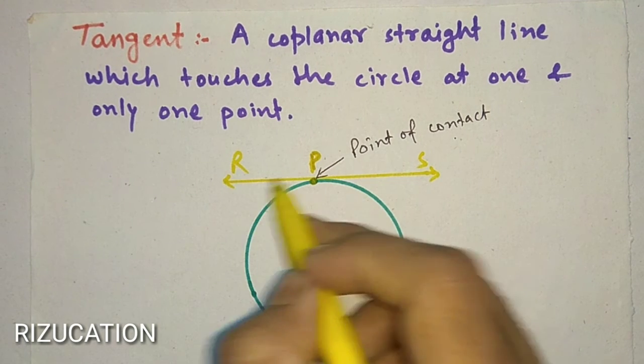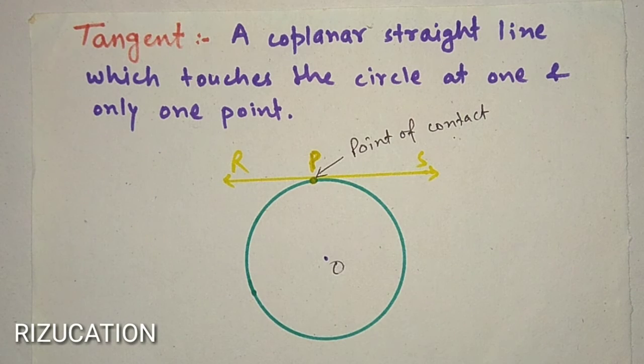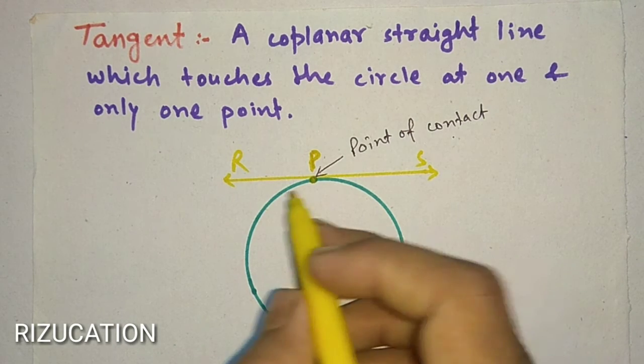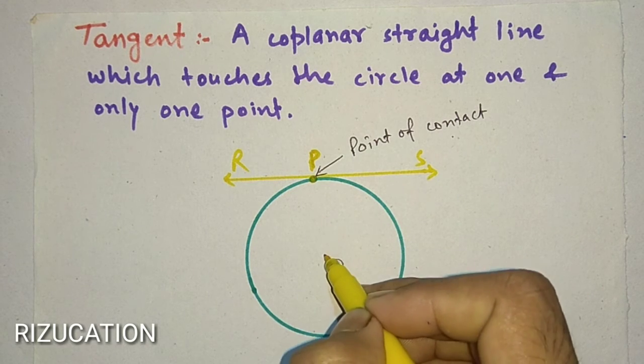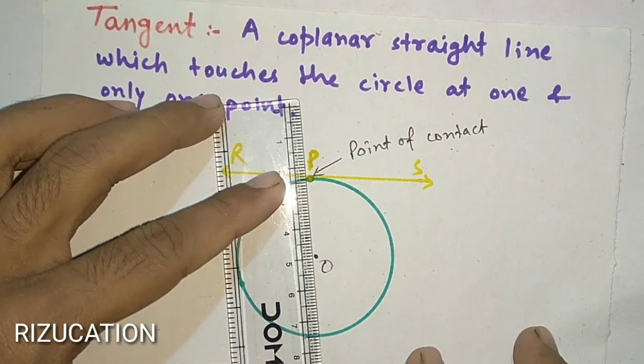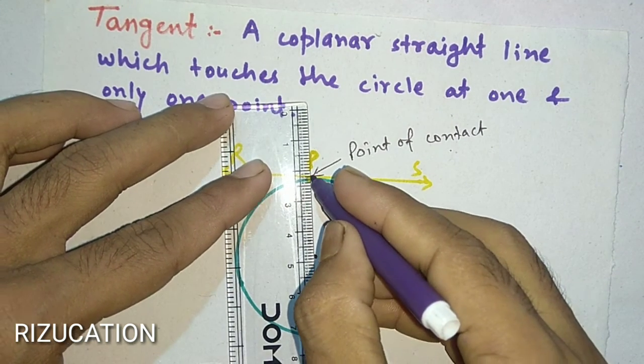Then this line is called tangent, and it has a property that this line is always perpendicular to the radius. When we draw a radius through this point, this will always be perpendicular with the radius.